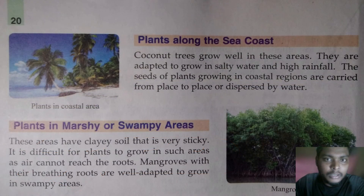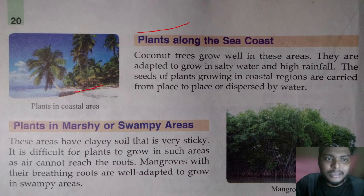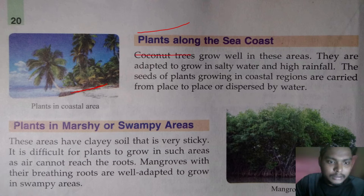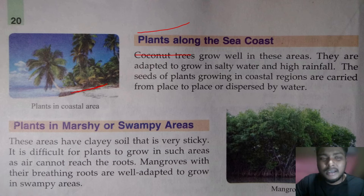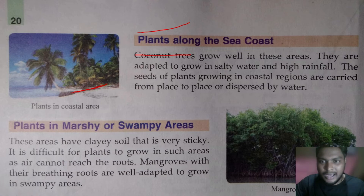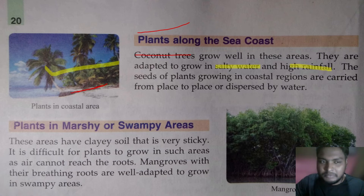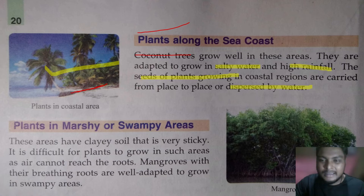Along the sea coast, there are plants like coconut that grow in coastal areas. They prefer to grow in the coastal region because of high rainfall and salty water, which are favorable conditions for the coconut plant. Their seeds are also dispersed by water, allowing them to reach and grow in other places.